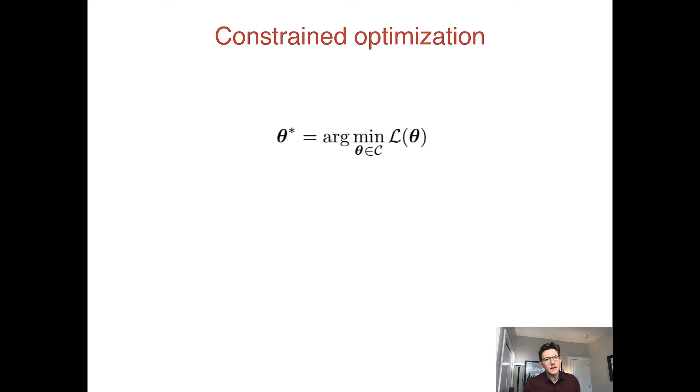There are many methods that have been developed for constrained optimization, and we're not going to have a chance to talk about them in this course. We're going to talk about just one method. There are a couple of different issues that come up. One question is simply how to find a value that's feasible, that is, within the constraints.